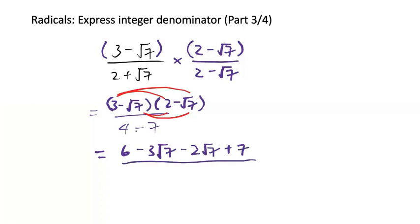And then for the denominator we have negative 3. We can still clean this up a little bit. So 6 plus 7 is 13, and then negative 3 root 7 minus 2 root 7, that would be minus 5 root 7 over negative 3. And we're done.